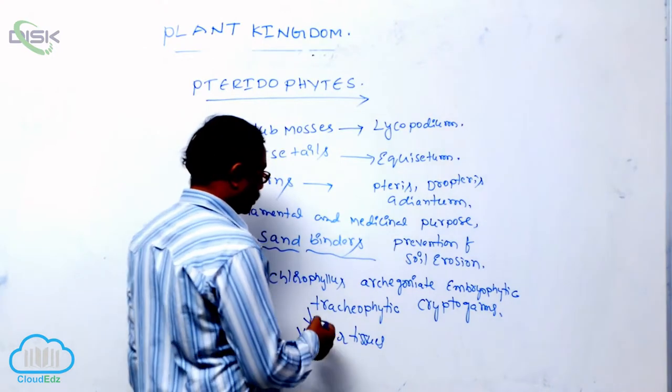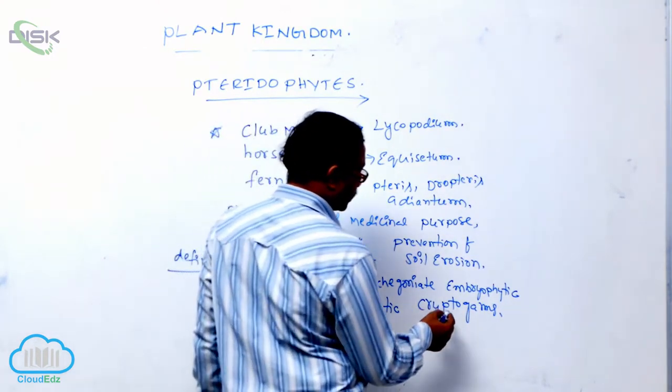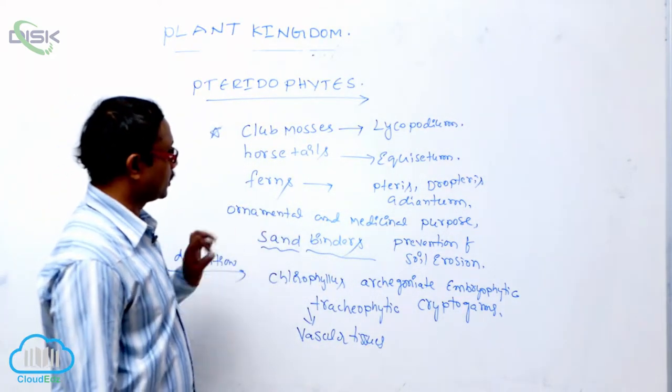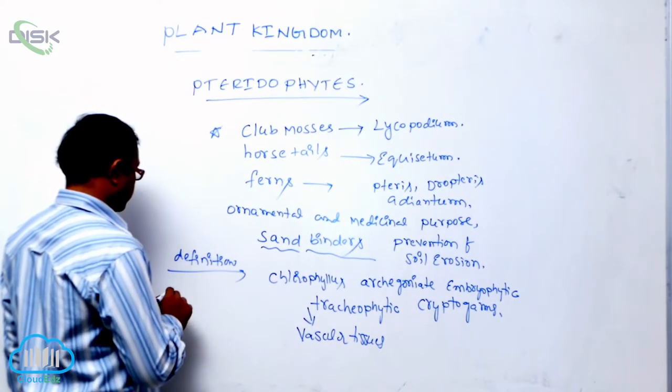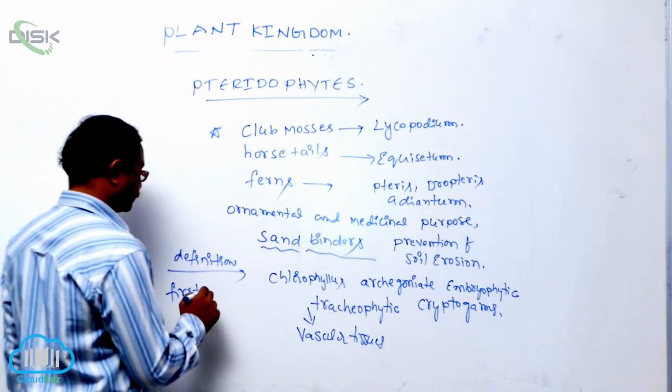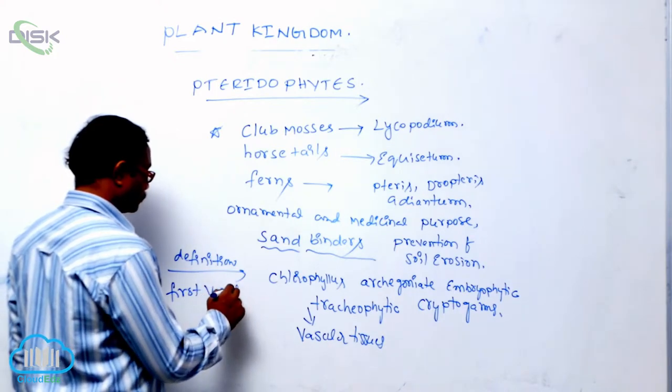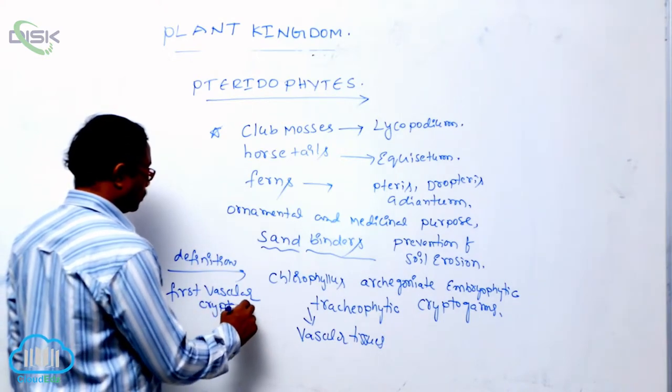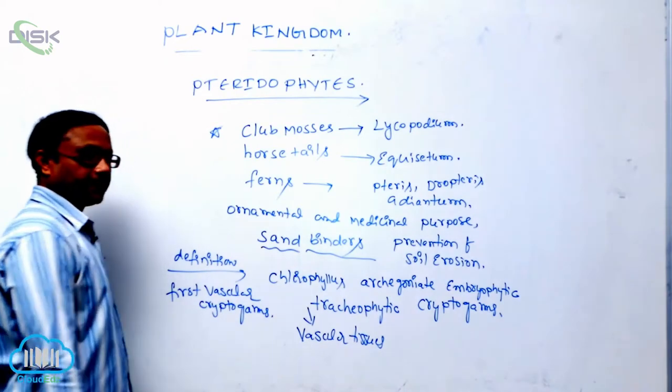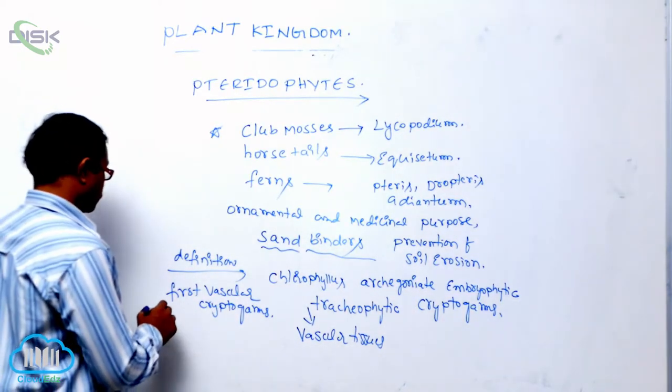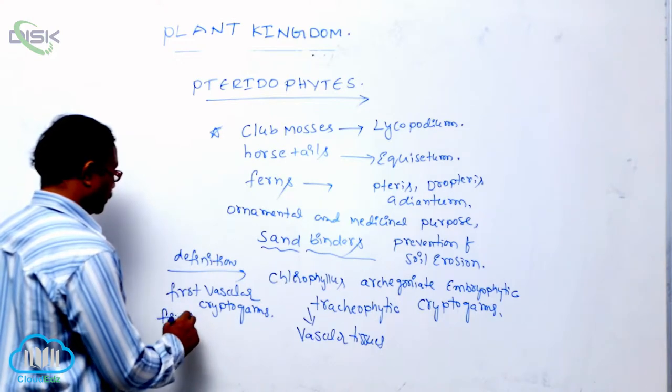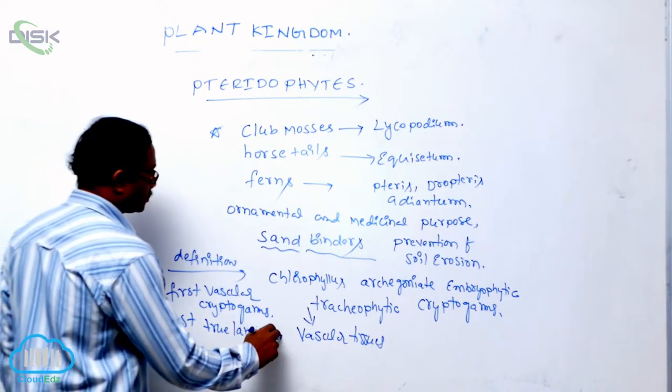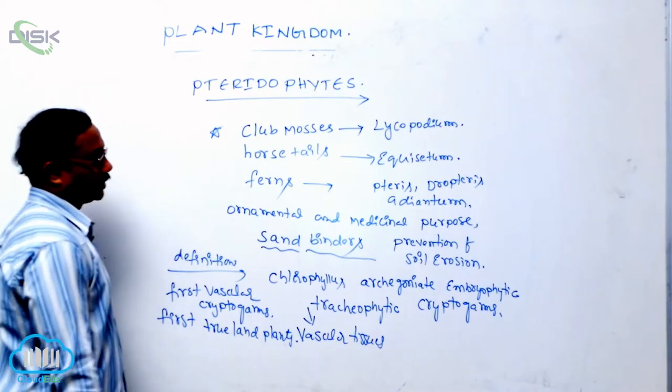Tracheophytic means they are having vascular tissues. Cryptogams means non-flowering plants. Tracheophytes are generally first vascular cryptogams. They are also the first true land plants.